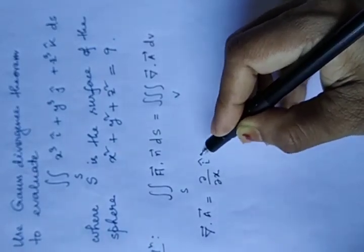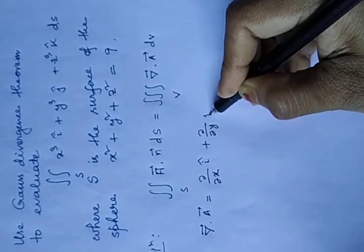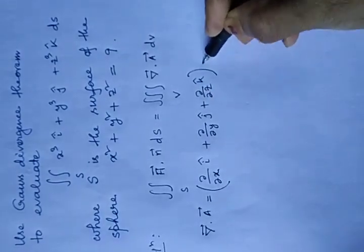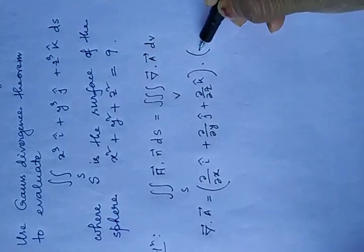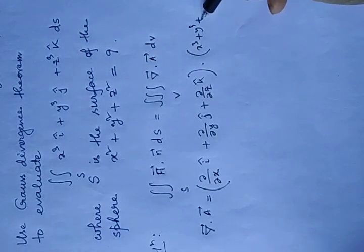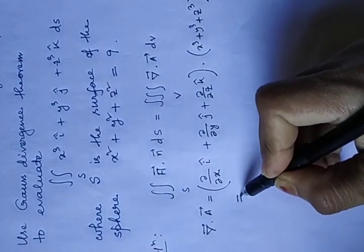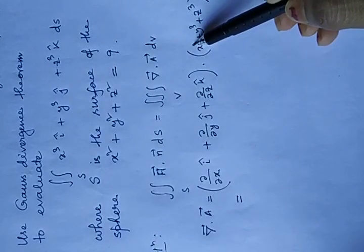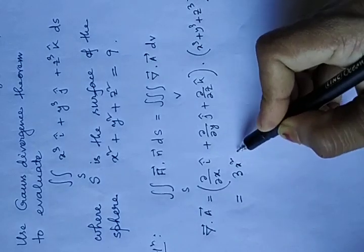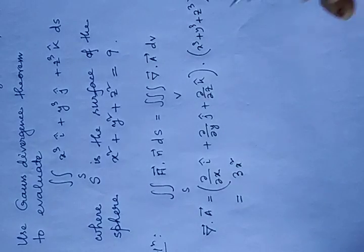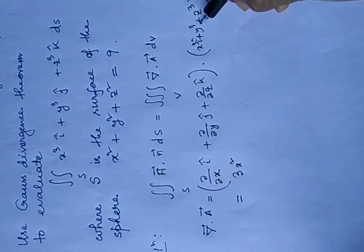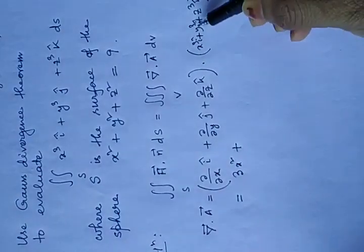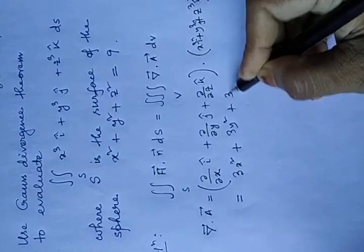As you know, grad is del/del x i plus del/del y j plus del/del z k. Dot a is given here as x cube i plus y cube j plus z cube k. So, if we find del/del x of x cube, we will get 3x square. Similarly, del/del y of y cube is 3y square and at last 3z square.